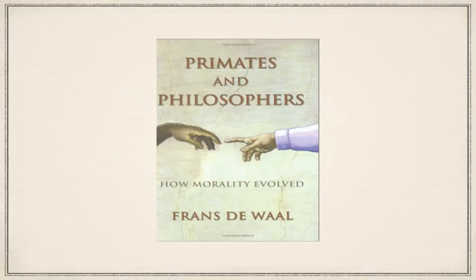Not only do we know about the evolution of species and parts like the eye, but also behavior. There's a book called Primates and Philosophers: How Morality Evolved by Frans de Waal — that would be a whole lecture too. We find morality, compassion, grief, justice, and revenge in other species besides humans.